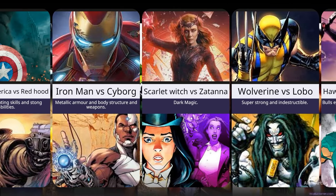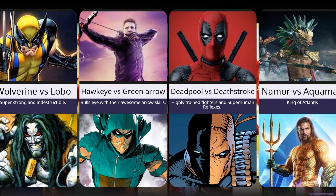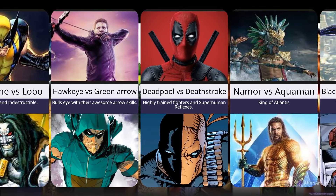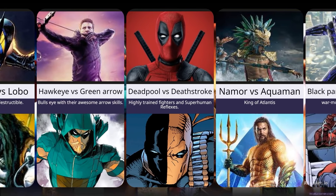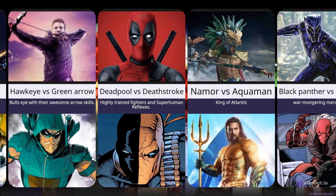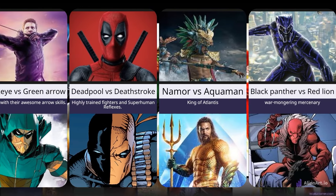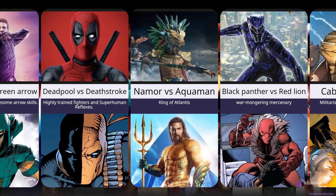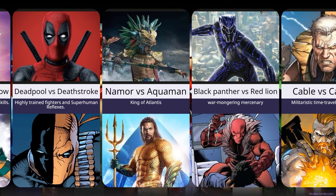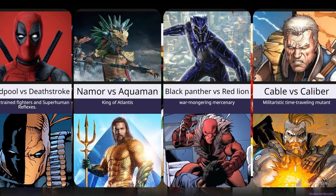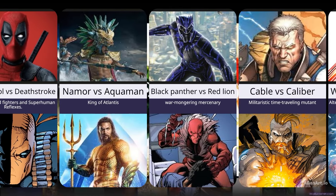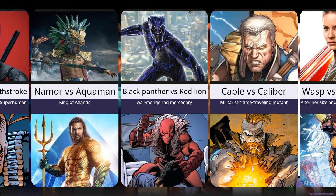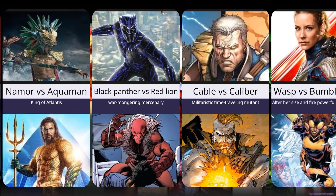In today's video, I've gathered mid and minor characters like Wolverine vs Lobo, Hawkeye vs Green Arrow, and Deadpool — who is somewhat of a copycat of Deathstroke. We also have Namor vs Aquaman. Namor is the King of Atlantis from Marvel, and we all know Aquaman from the Justice League as he is part of the DC heroes.